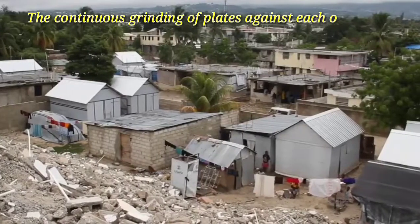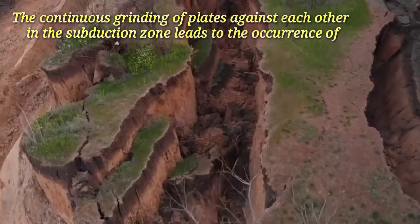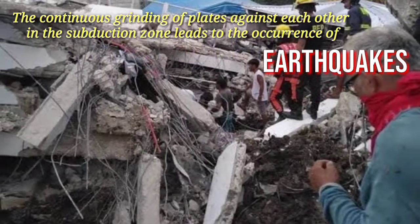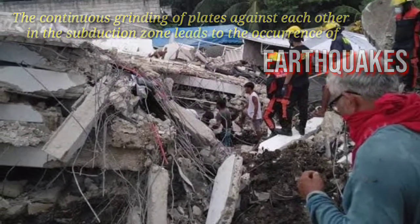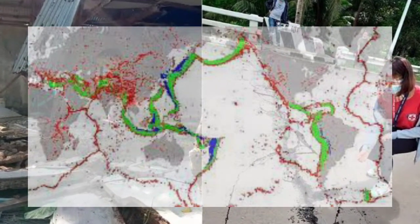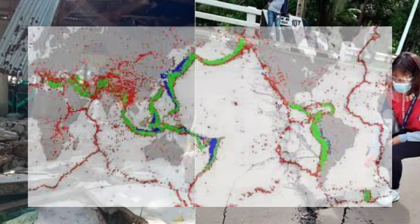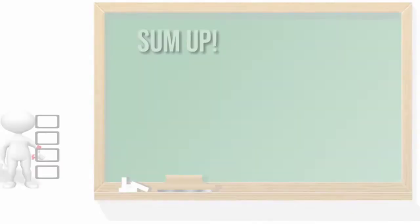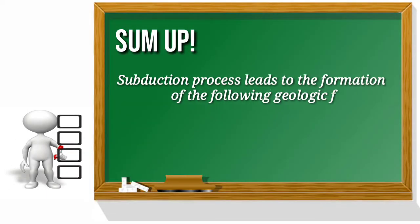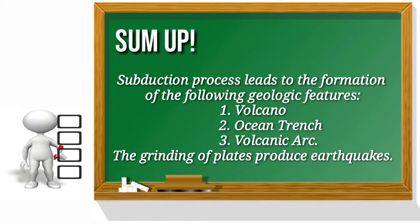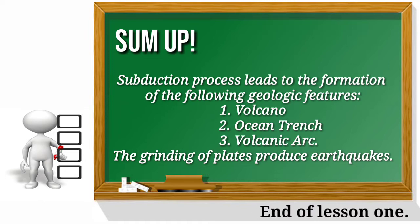Subduction zones have a lot of intense earthquakes and volcanic eruptions. The continuous grinding of plates against each other in the subduction zone leads to the occurrence of earthquakes. Earthquakes produced in the subduction zone are the reason why most earthquake epicenters are found along the boundaries of the lithospheric plates. To sum it up, subduction process leads to the formation of the following geologic features: volcano, ocean trench, and volcanic arc. The grinding of plates produces earthquakes. And that's the end of lesson one.